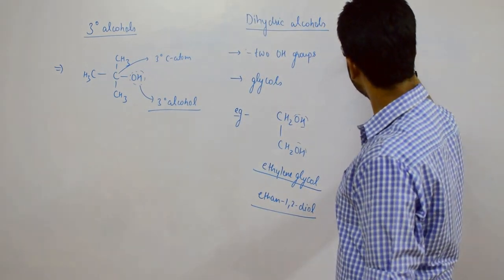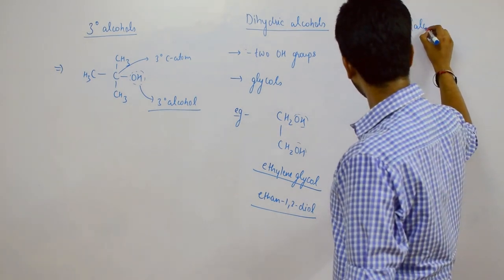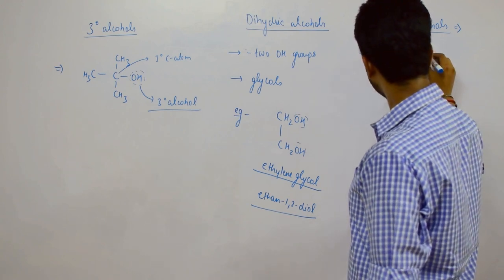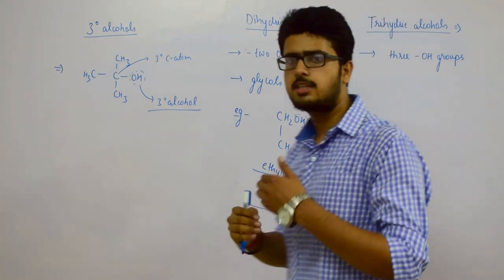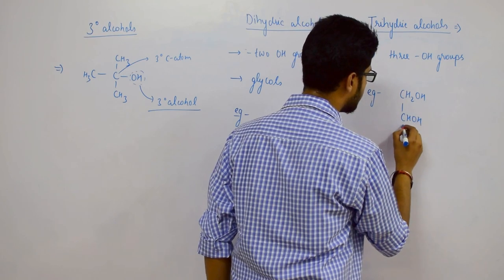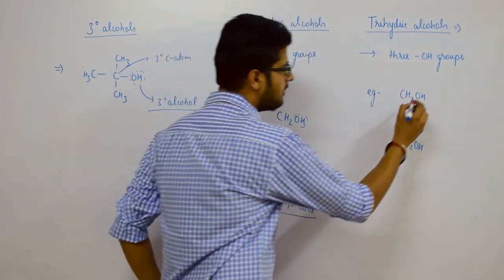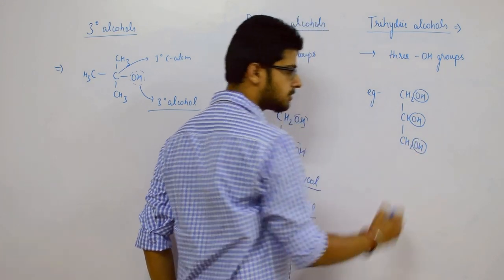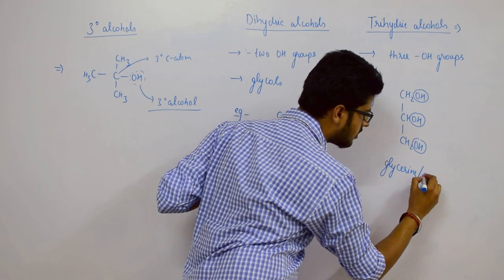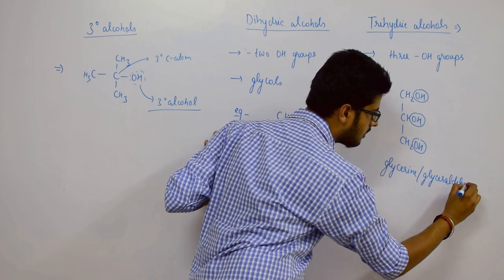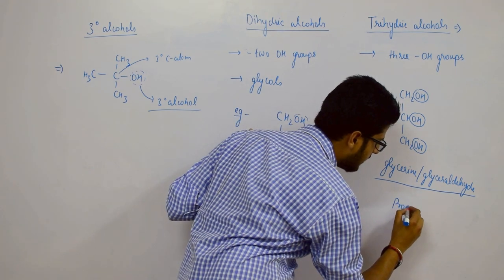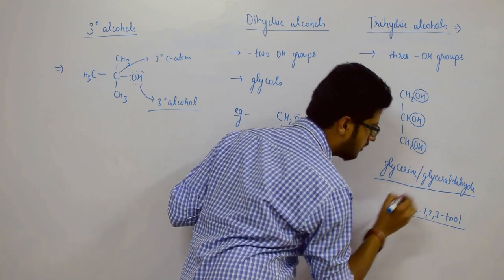Trihydric alcohols have three OH groups in their structure. For example, CH2OH-CHOH-CH2OH is a trihydric alcohol. Its common name is glycerol (also called glyceride), and its IUPAC name is propan-1,2,3-triol.